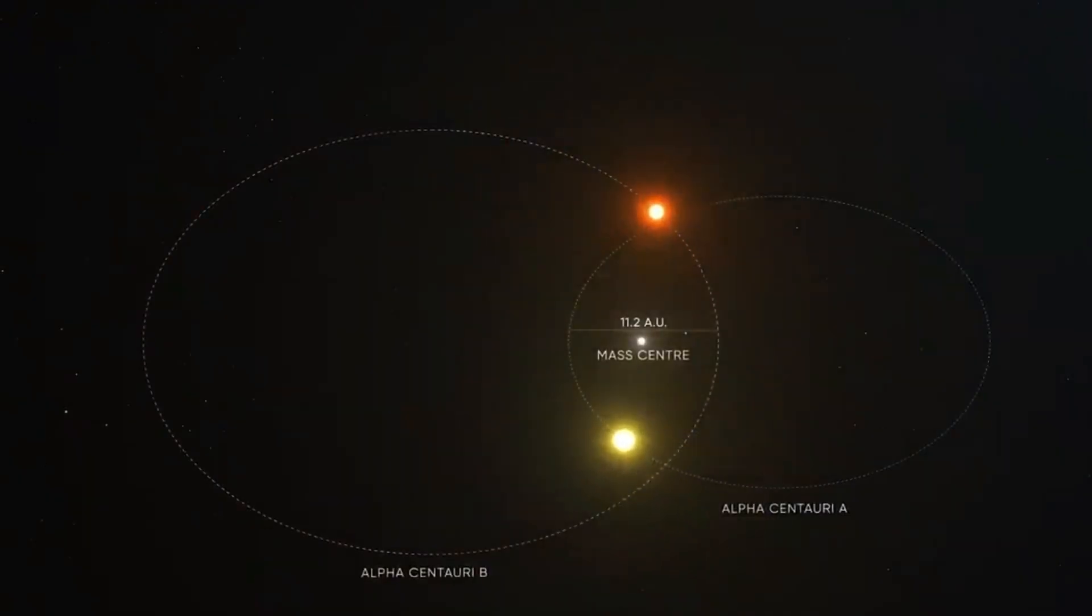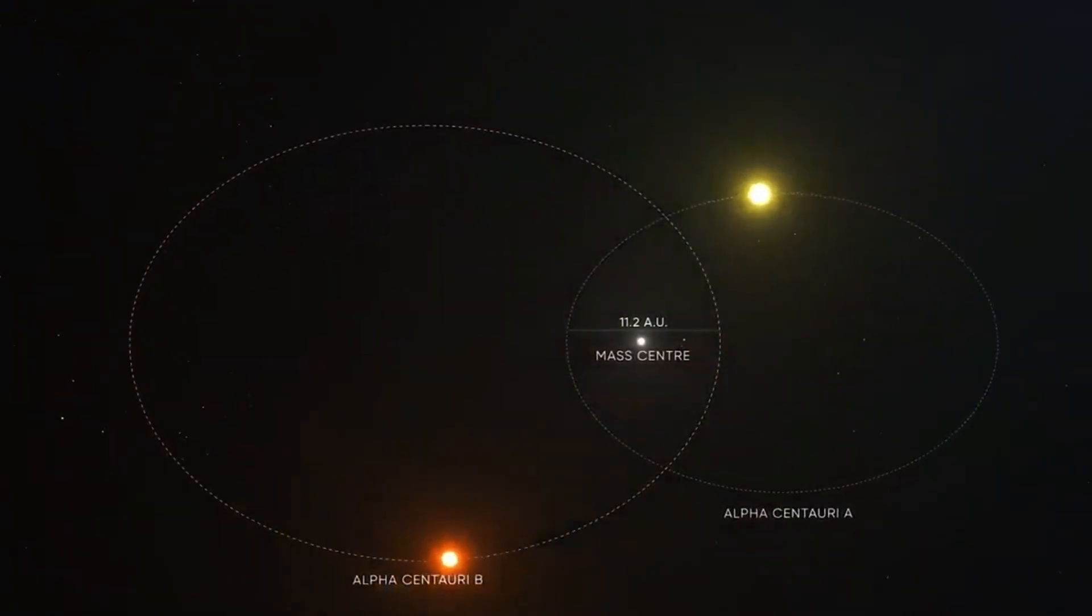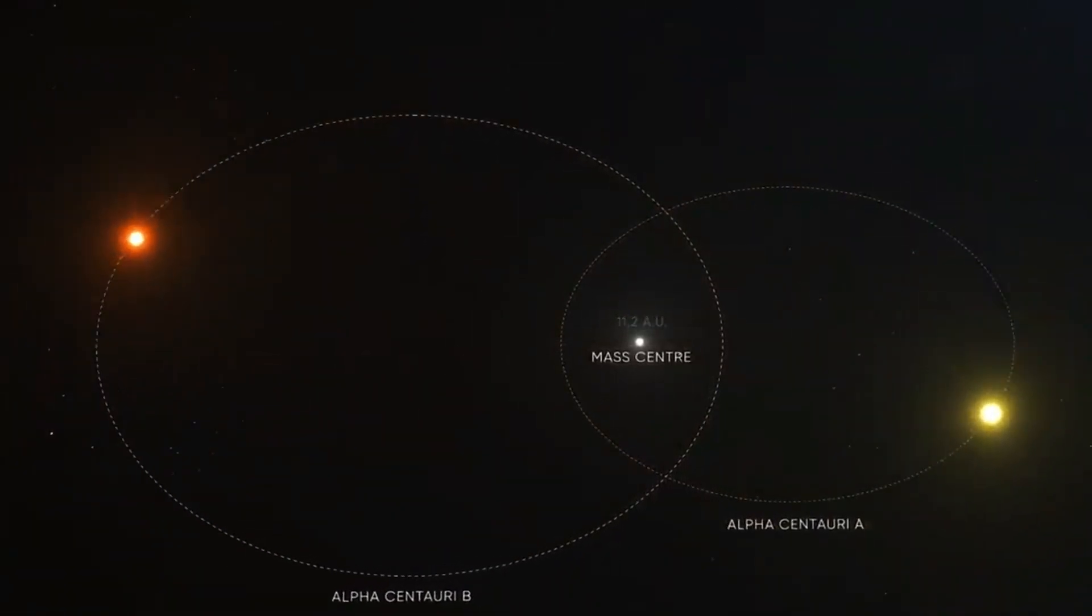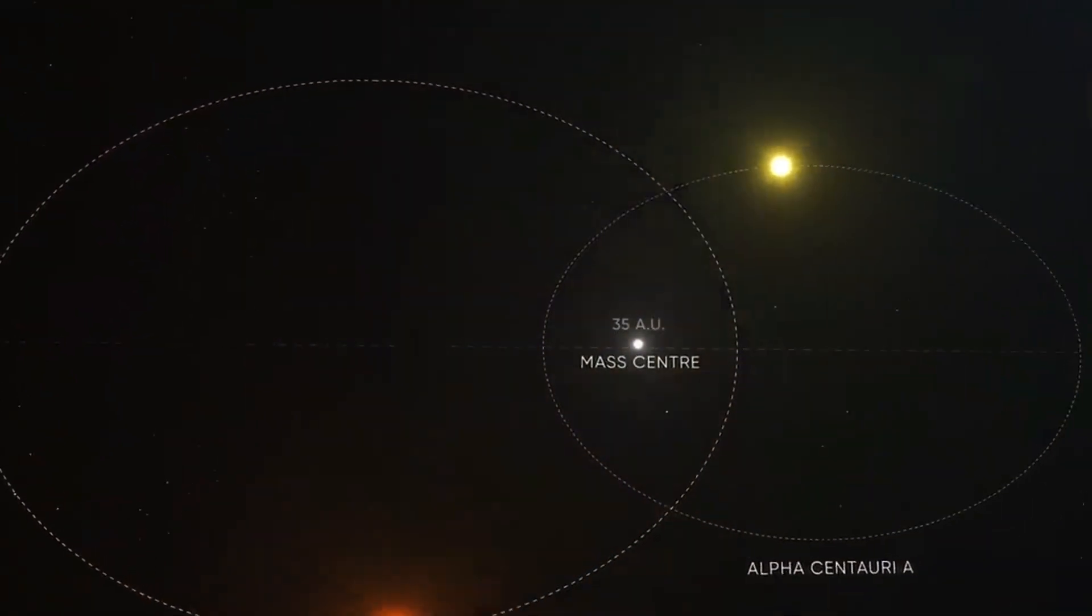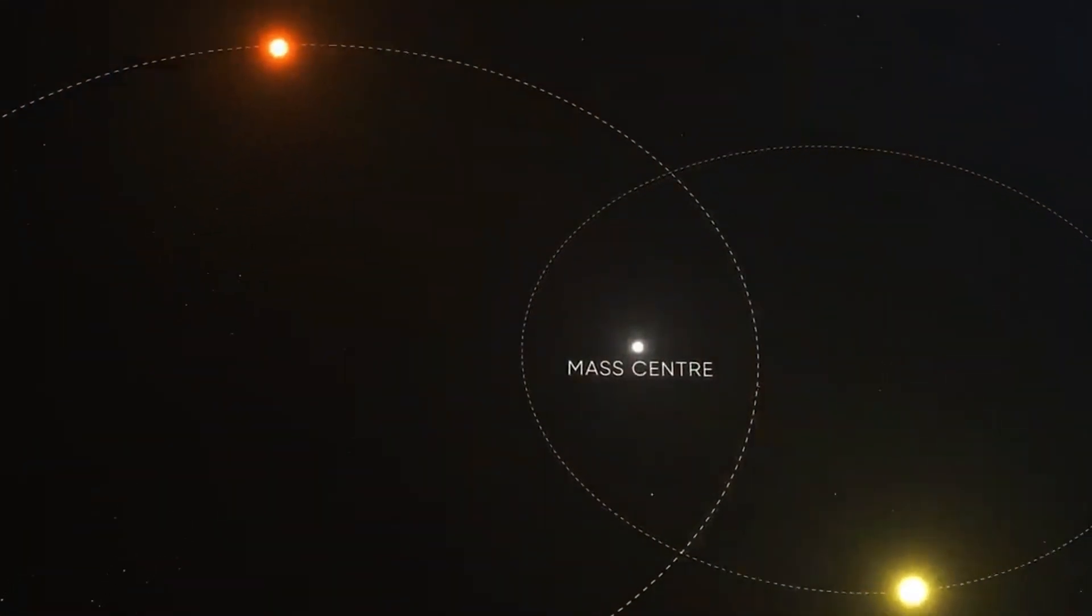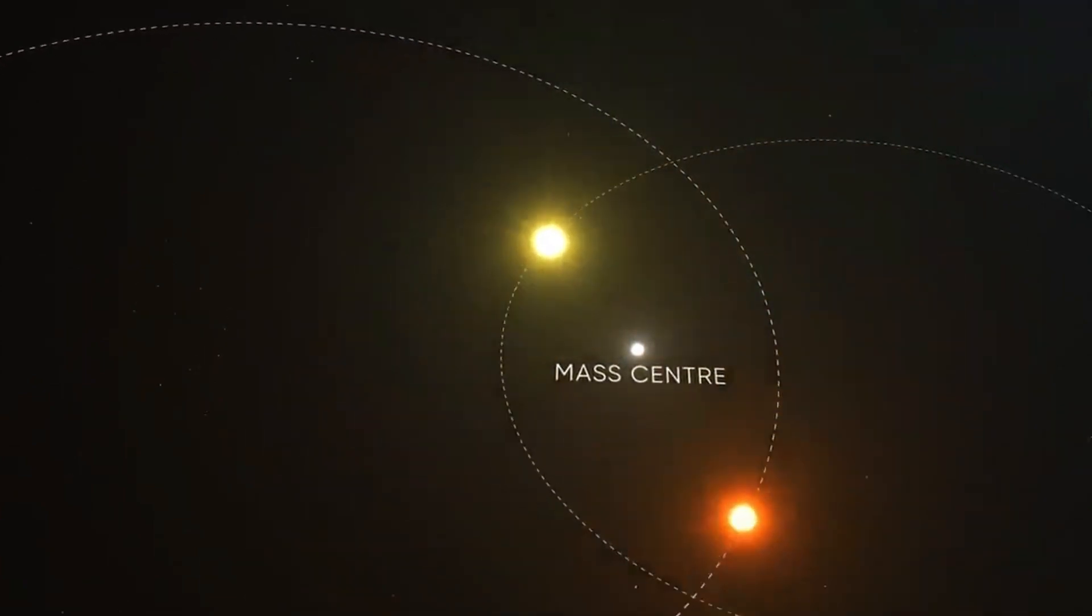It consists of two stars interlocked in an orbit around each other, or binary stars, and one other star. In addition, although Proxima Centauri is the closest star to Earth, it is too small and too dim to see with the naked eye from our planet.